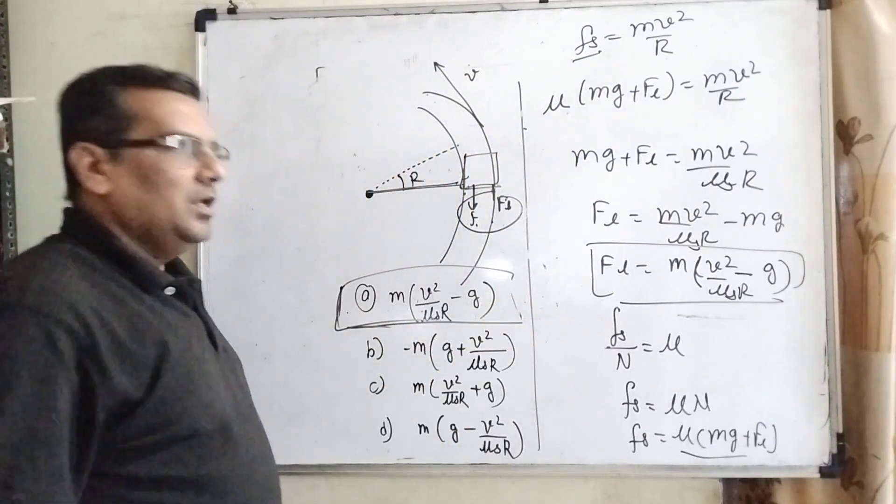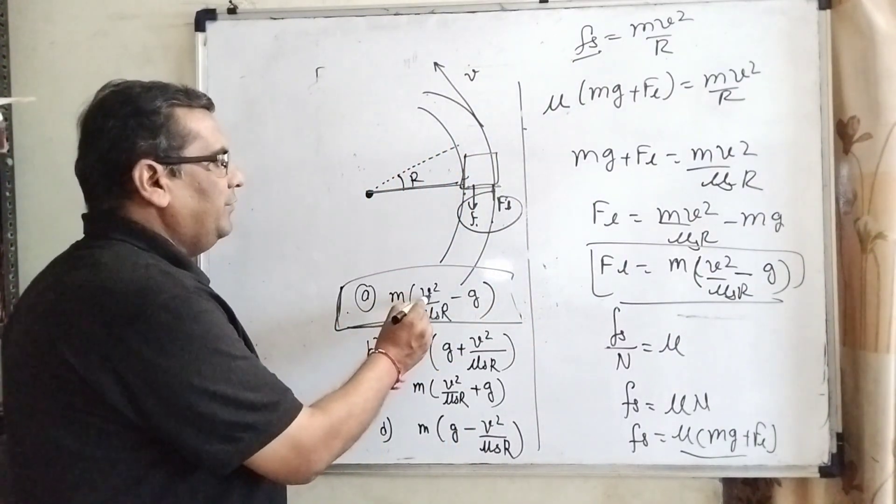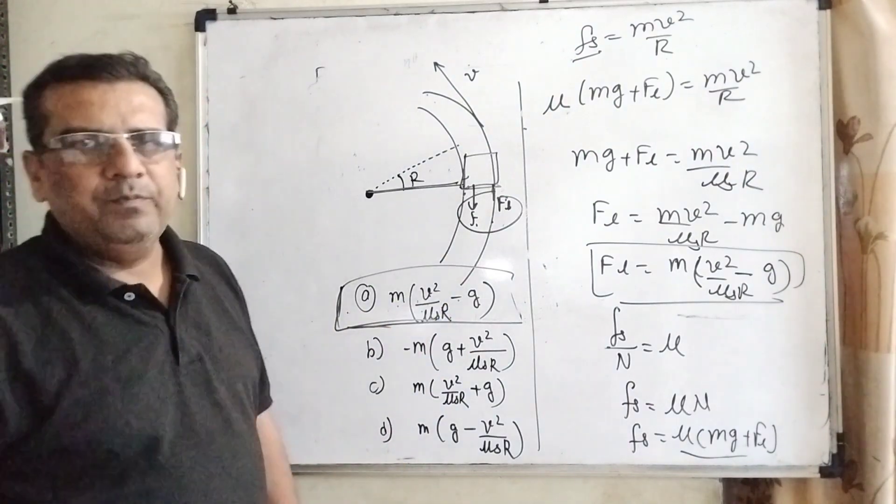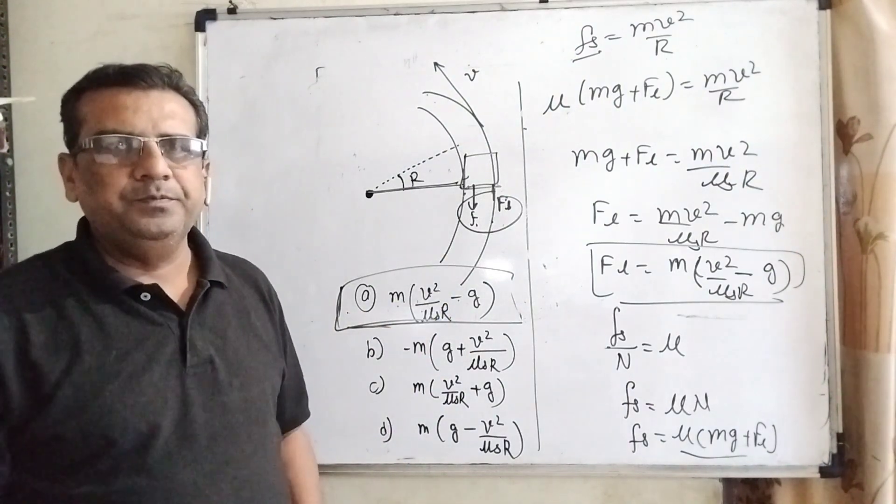So the answer is option A: m times (v²/μs·R − g). I hope you understood this problem. Thank you, dear students, for staying till the end of the video. I know you are working very hard, and if I can be a part of your success journey, it will be my pleasure. When more and more students join this journey, that will be a great thing. Thank you once again — take care.